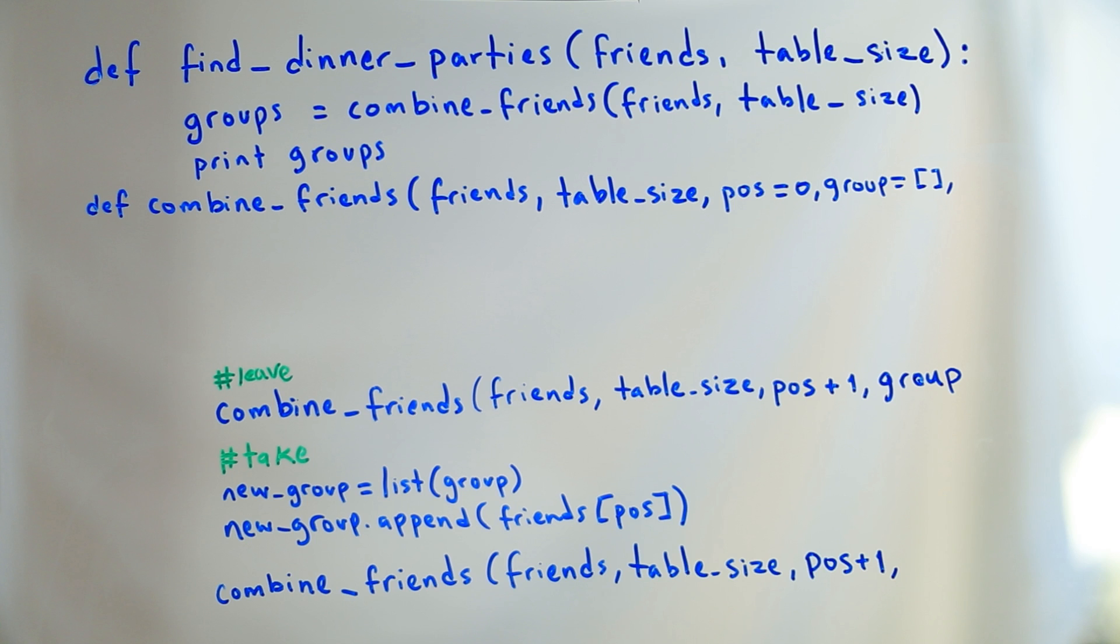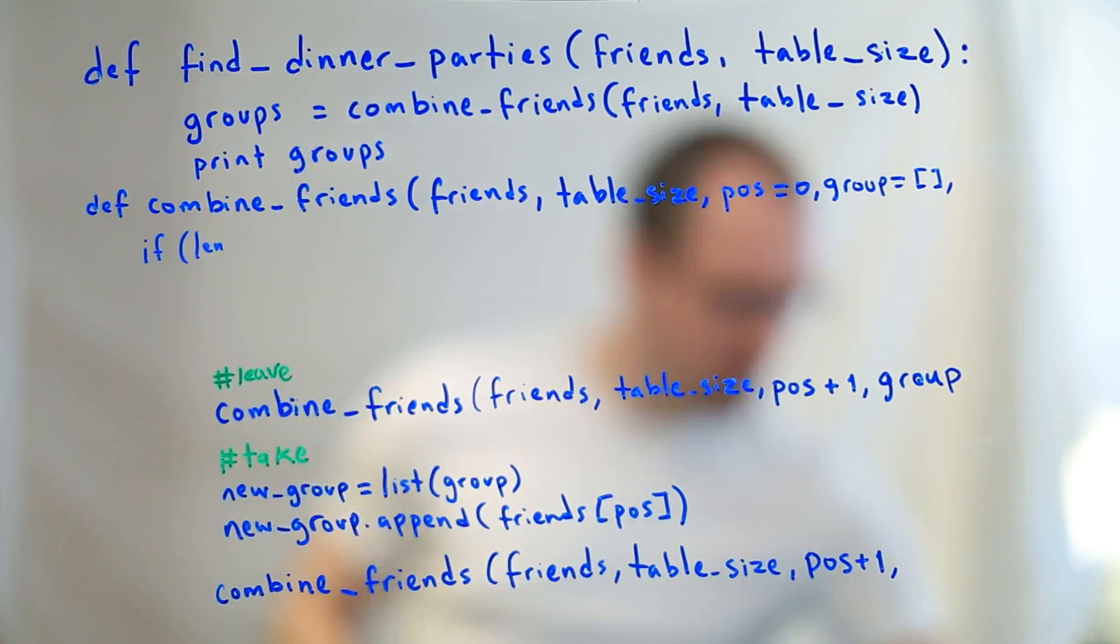But there's an important thing that's missing here, which is any sort of termination case. Right now, the termination case is going to be whenever position is so high that it indexes out of bounds, so we need to put in place some sort of termination clause. And really, we have two termination clauses.